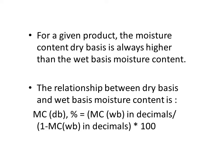The relationship is: moisture content on dry basis (%) = (moisture content on wet basis in decimal / (1 − moisture content on wet basis in decimal)) × 100. One important point to note is that the moisture content on a dry basis is always higher than the wet basis moisture content.